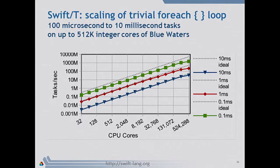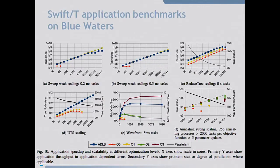We've done a lot of our scaling work on Blue Waters. For a raw bag-of-tasks case, running something simple as fast as possible, we can talk about running tasks as short as 10 milliseconds and make pretty good utilization of 500,000 cores on Blue Waters, running at 1.5 billion tasks per second or more. This work covers a lot of different benchmarks. An interesting one is Wavefront, where you're filling in cells in a matrix — filling in cell I from cells I-1, J-1 — which is a very dataflow-intensive workflow.